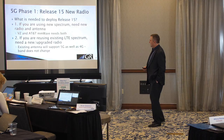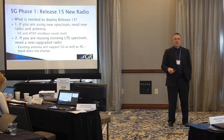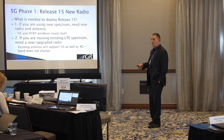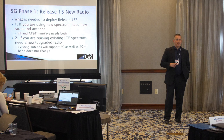So, Phase 1. Release 15 radios are going in today. What do we actually have to do to put in Release 15? Number one: if you're using new spectrum, you're going to need a new radio and a new antenna. T-Mobile is putting in 600 megahertz — they were doing it last year — putting in Release 15 radios on new spectrum they have not used before. New antenna, new radio. Verizon's and AT&T's millimeter wave needs both of those as well.